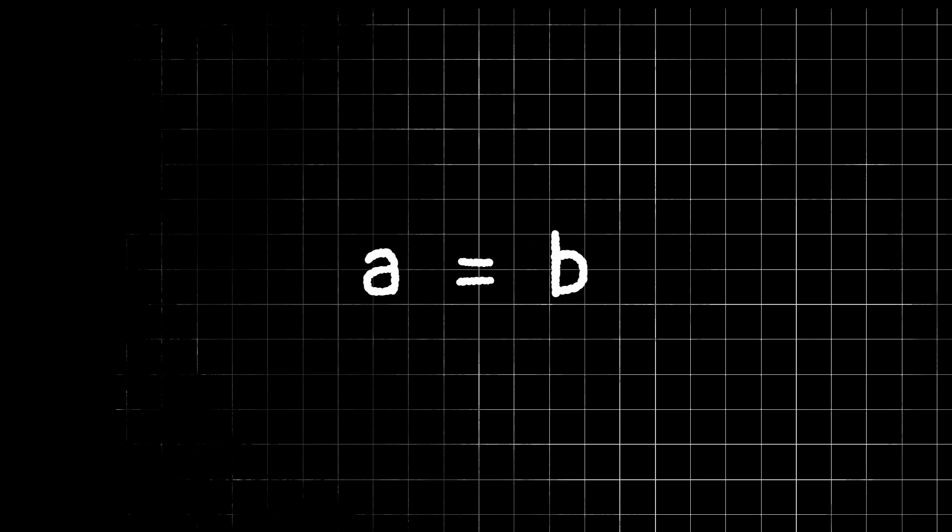Now we can multiply both sides by a, and since we're doing the same thing to both sides of the equation, we're all good to go. So we have a times a equals a times b, or in other words, a squared equals a times b.